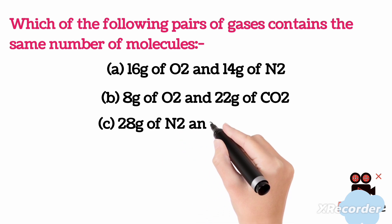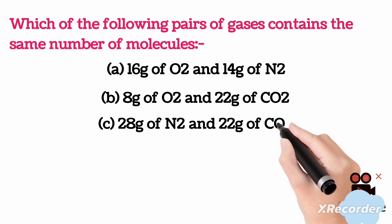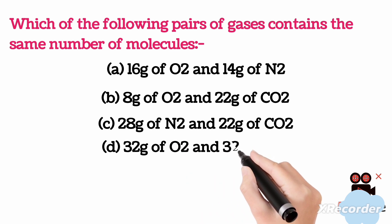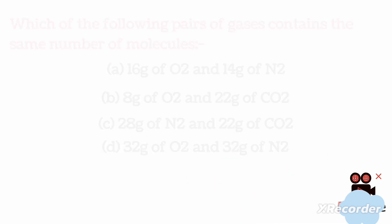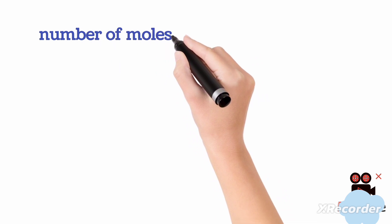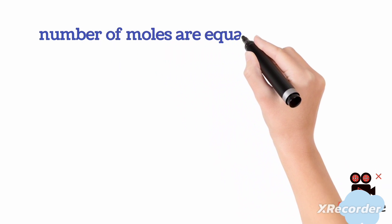The gases are oxygen, nitrogen, and carbon dioxide, and the molar masses are oxygen 32 grams, nitrogen 28 grams, and carbon dioxide 44 grams. We know that the number of moles are exactly equal to the number of molecules.